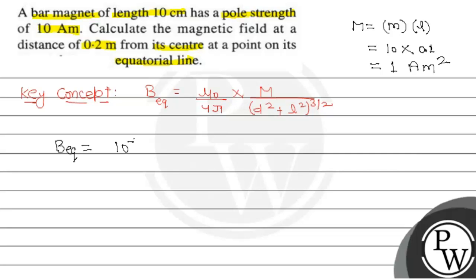Okay, so putting the values, B equatorial will be equal to mu naught upon 4 pi, value 10 to the power minus 7, m value 1, and d value is 0.2 meter, 0.2 squared. And here is half length - this is 2l which is given, so half length is 0.05. D squared plus l squared, whole to the power 3 by 2.